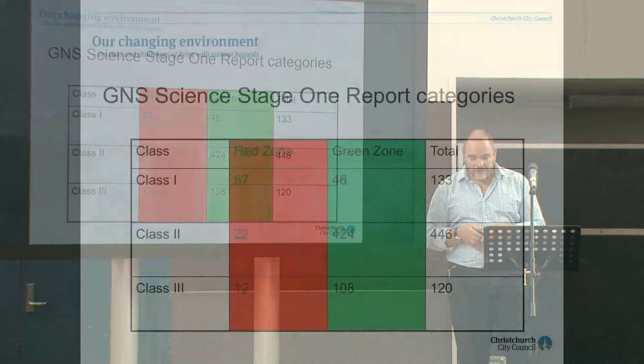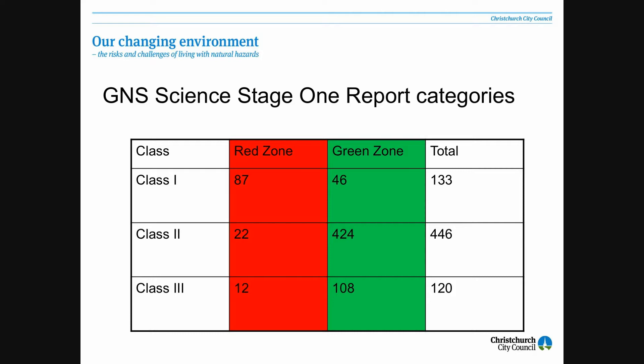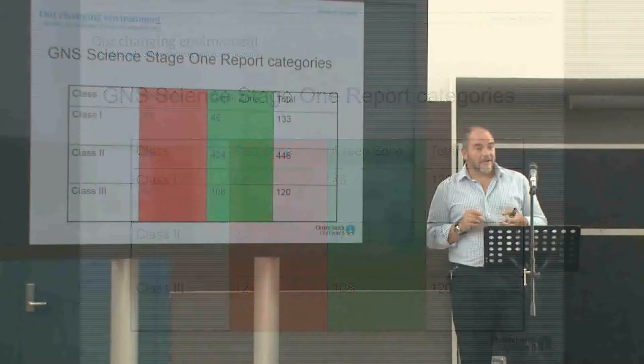Our main issue is the Class 1 areas. GNS Science gave us a Stage 1 report; you can see how many properties are in the red zone post-review, the green zone, and the total. The big concern is those in the Class 1 green zone, because GNS is saying they are at an increased life risk. If you are in the way of a Class 1 failure event, the probability of escaping with your life intact is very, very remote. So that is our priority right now — we're working quickly to understand this and come up with a way forward.